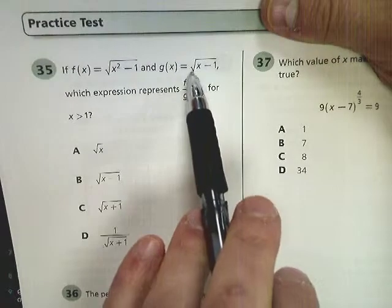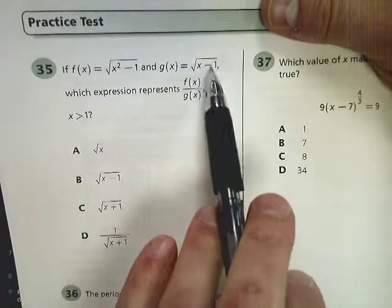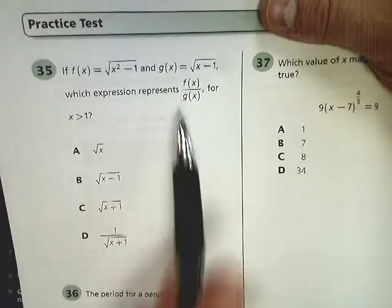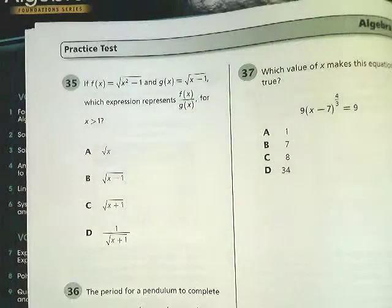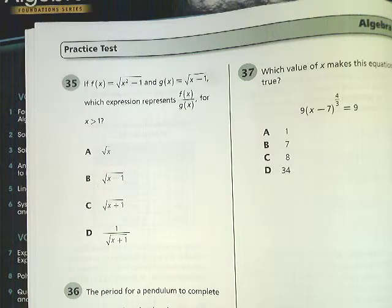This is because if you had anything less than 1 here, you wouldn't get that square root of 0 that you would need. It wouldn't work. So it's got to be greater than 1. And if it was 1 itself, then you would end up getting a 0 there, and you can't divide by 0.